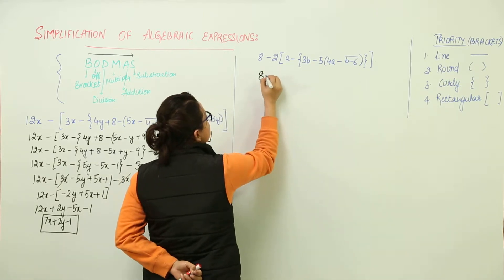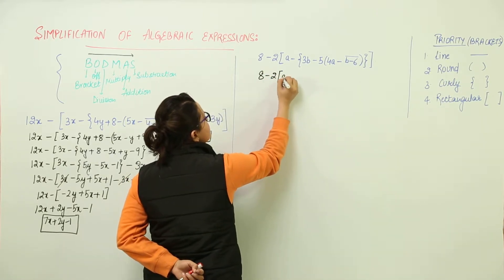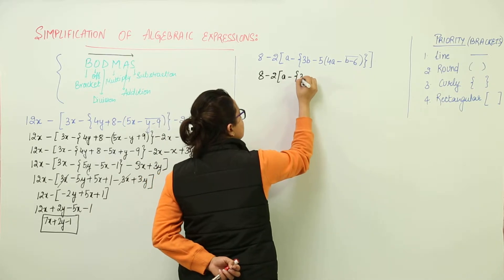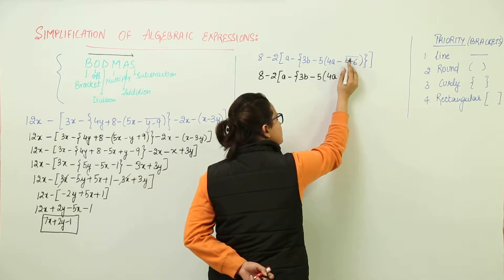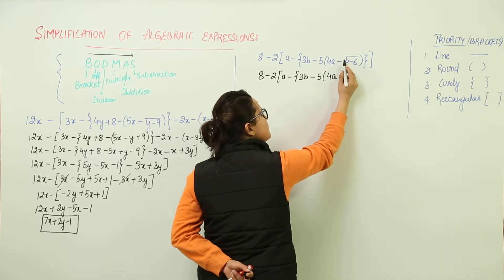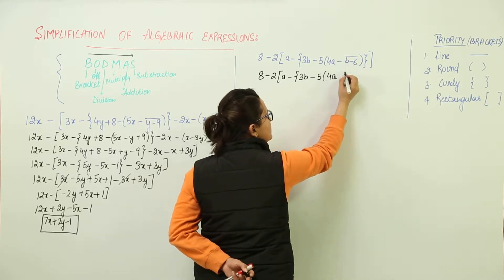We have 8 minus 2a minus 3b minus 5 for a. Now you are going to remove this bracket, that means when you open it the sign gets multiplied with each term. So we have minus b minus minus plus 6, and that's it.